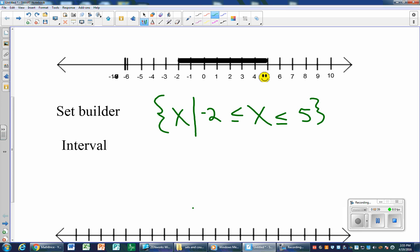So how do we do that in interval notation? Well, it is filled in, so it is a bracket: negative 2 all the way up to 5, and the 5 side is filled in, so that's a bracket also.